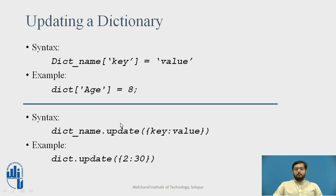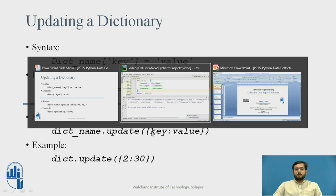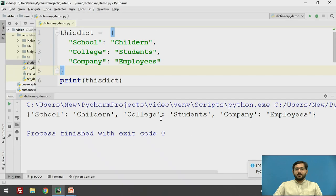The second way to update a dictionary is using the update function. Dictionary name dot update, in brackets, enclosed in braces, key value. We will just check it out.